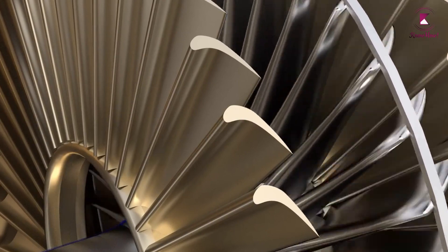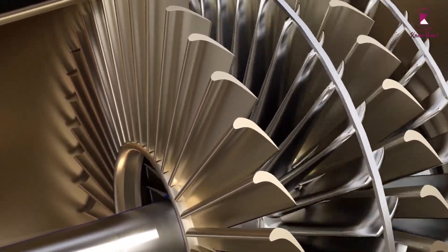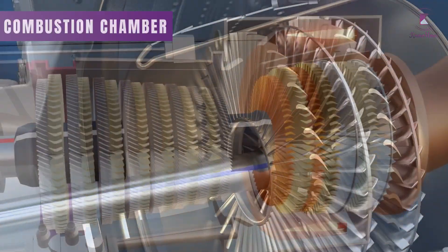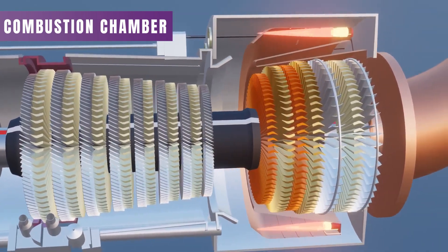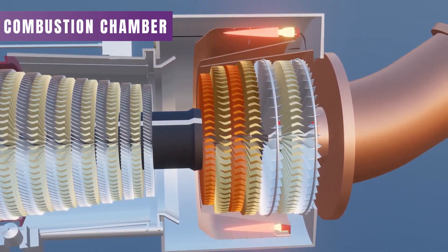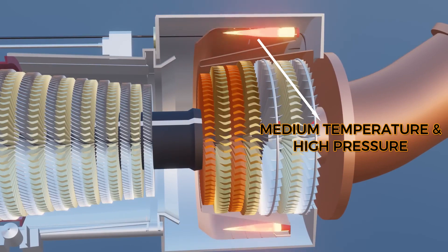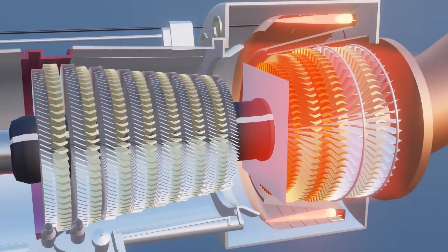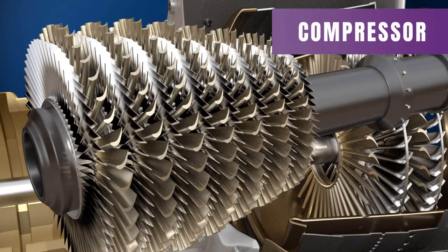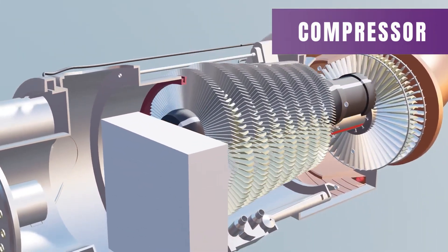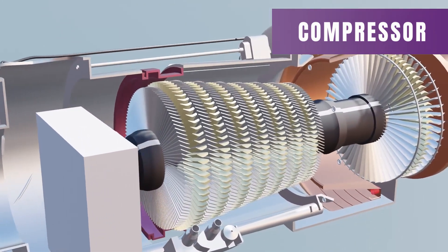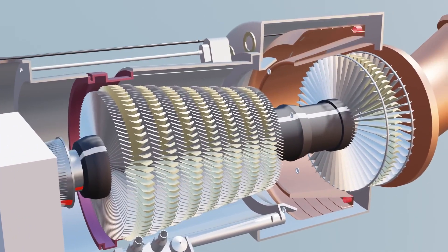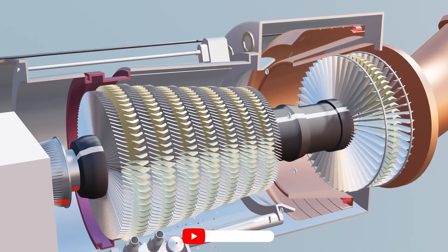Now the question is how this high-energy gas is produced? The answer is a combustion chamber. For effective combustion, atomized fuel is to be mixed with medium temperature and high-pressure air. This air is produced by a set of compression stages. You can see this compressor is fitted on a hollow shaft and is not connected to the power shaft. The compressor requires energy for its operation.